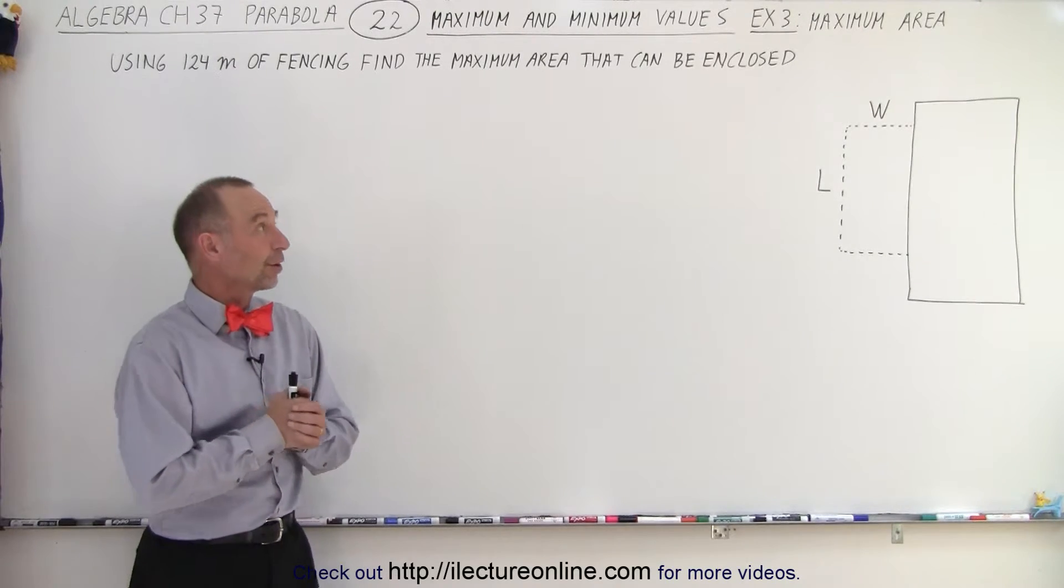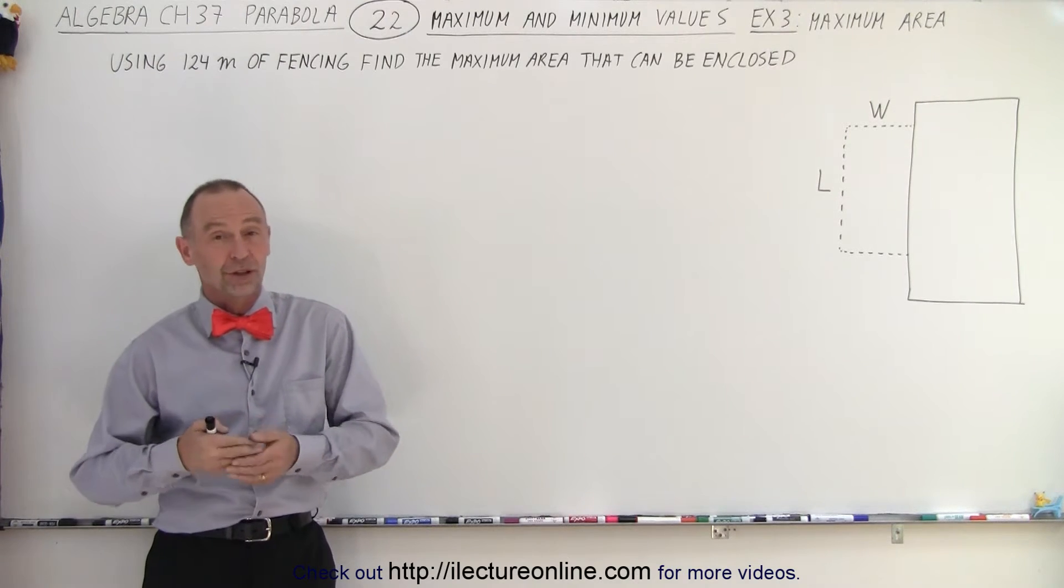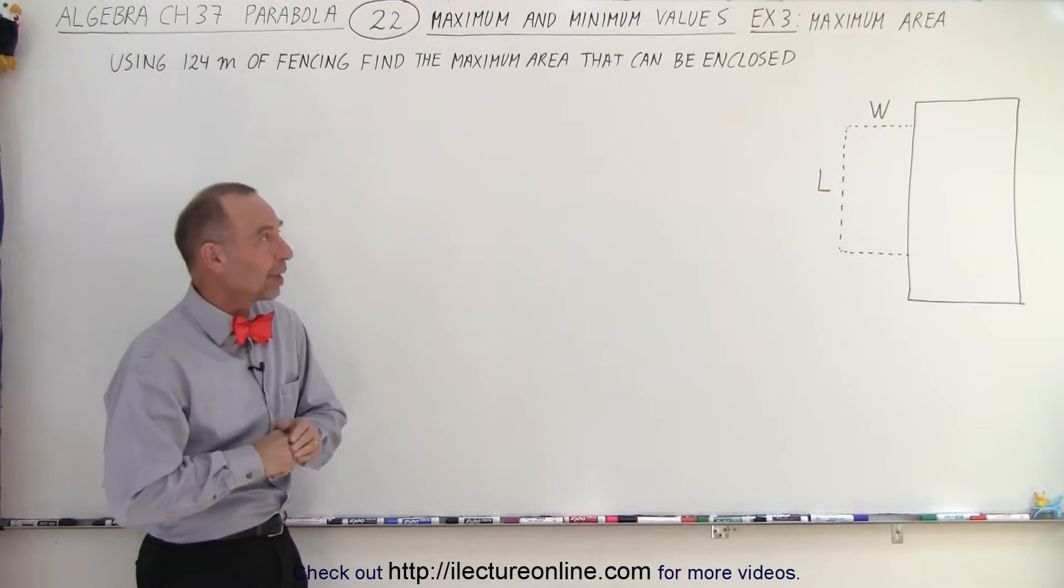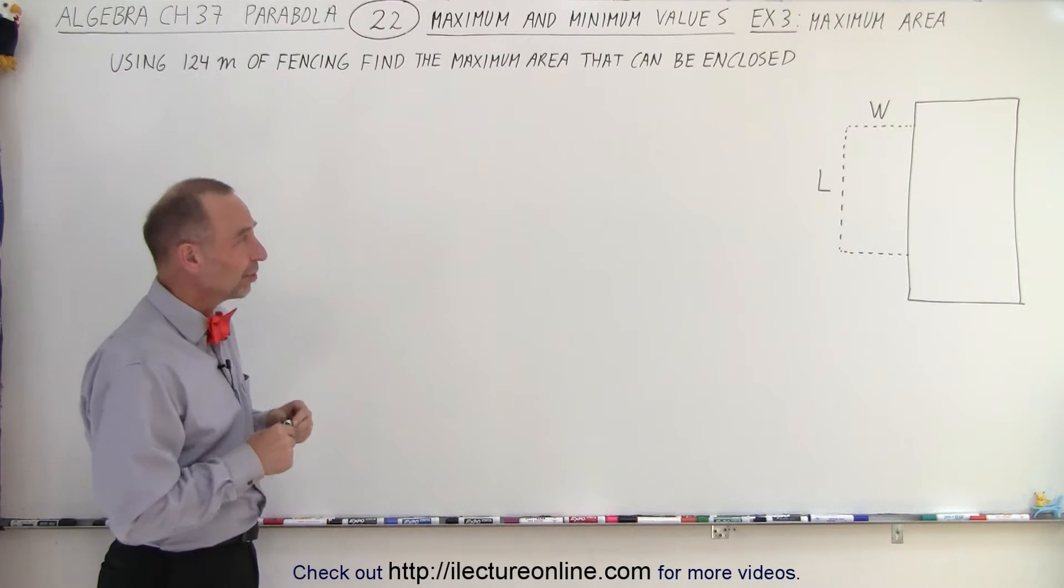Welcome to our lecture online. So here's our third example of maximum or minimum values using a parabola or using a quadratic equation. And in this case, they're not giving us the equation. We're supposed to come up with the equation ourselves.